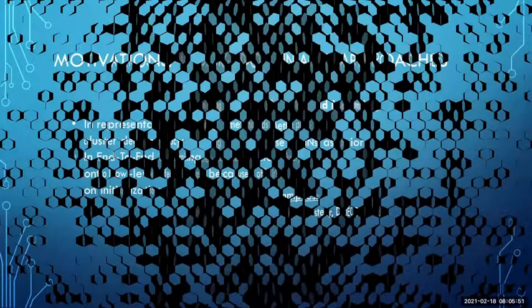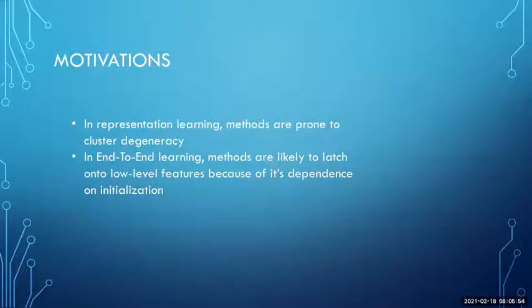So what's the motivation behind this particular paper? They're trying to address two challenges, one from representation learning, the other from end-to-end learning. From representation learning, the challenge they're trying to address is cluster degeneracy. Because the clustering and the training of the neural network are decoupled, their challenge with this is that the k-means or whatever they're using to get the clusters is prone to cluster degeneracy, which could be just one singular cluster being generated.